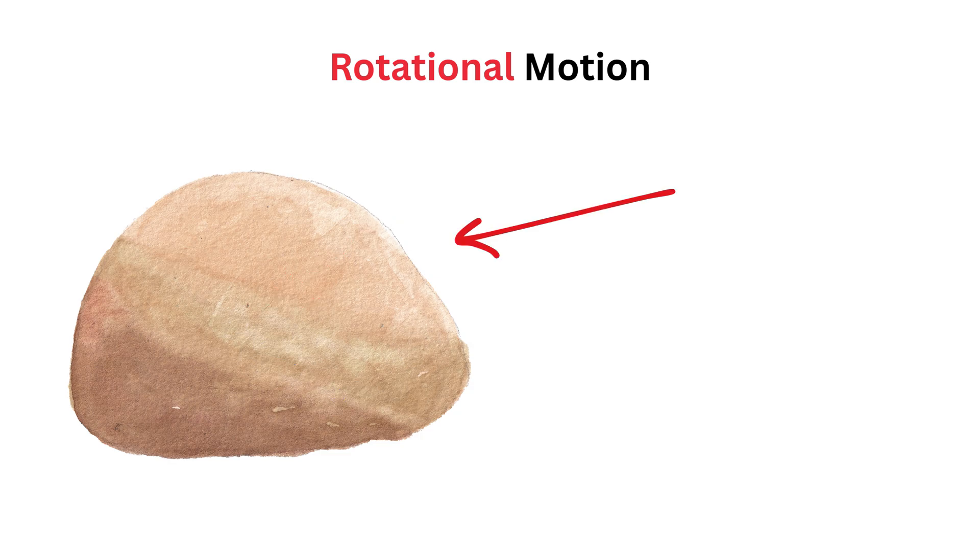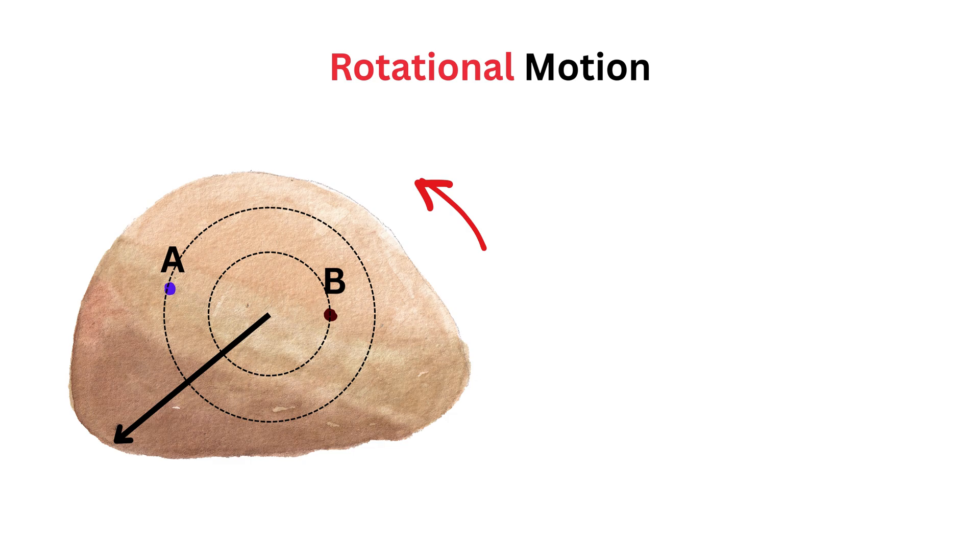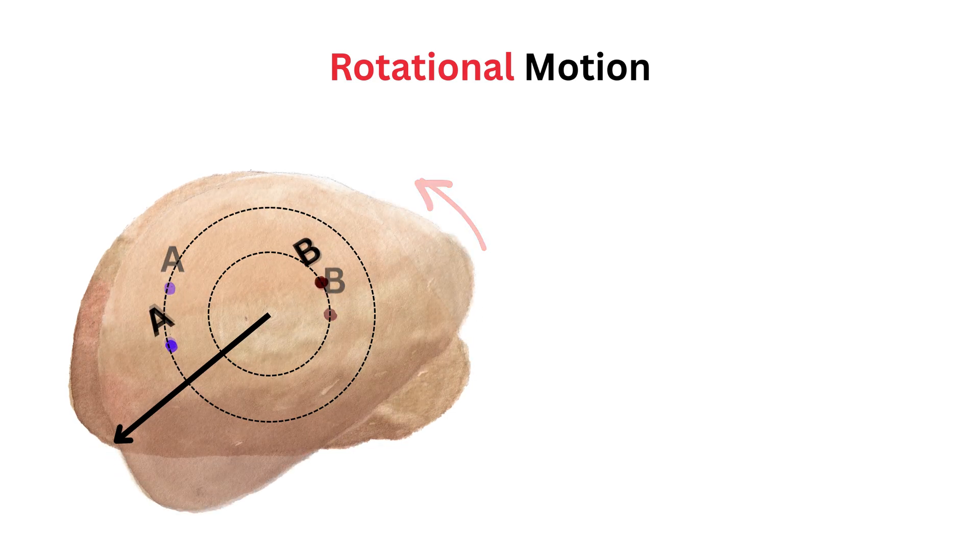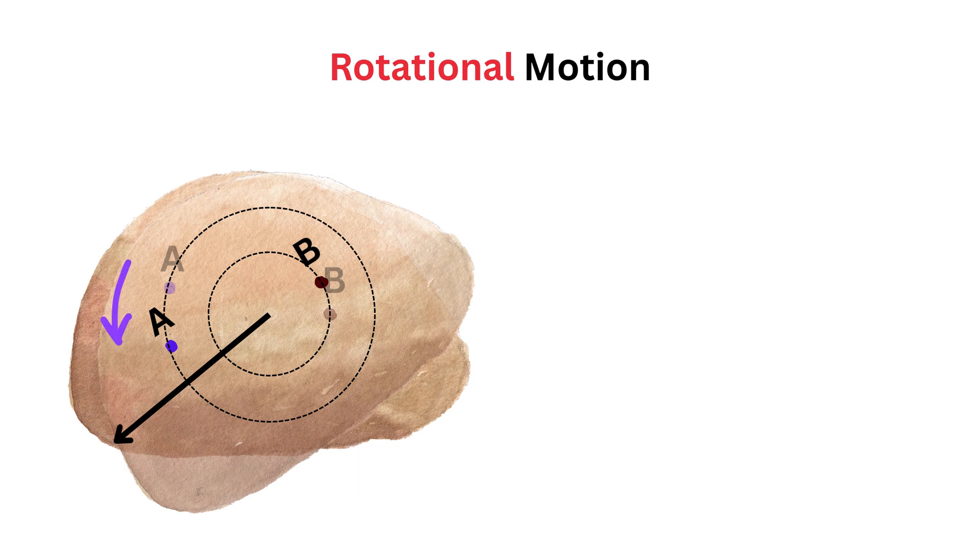Suppose our rigid body is like this, and it is rotating about its center like this, so this is the axis of this disk. Suppose point A is here, and B is here. Now when the disk rotates, A will rotate like this, along this circular arc, and move here, and B will rotate like this, along this circular arc, and move here.